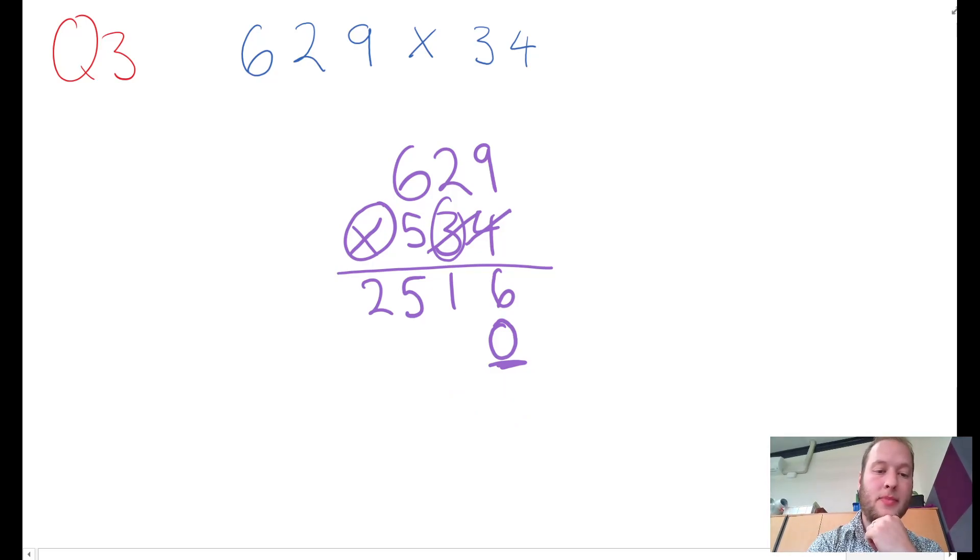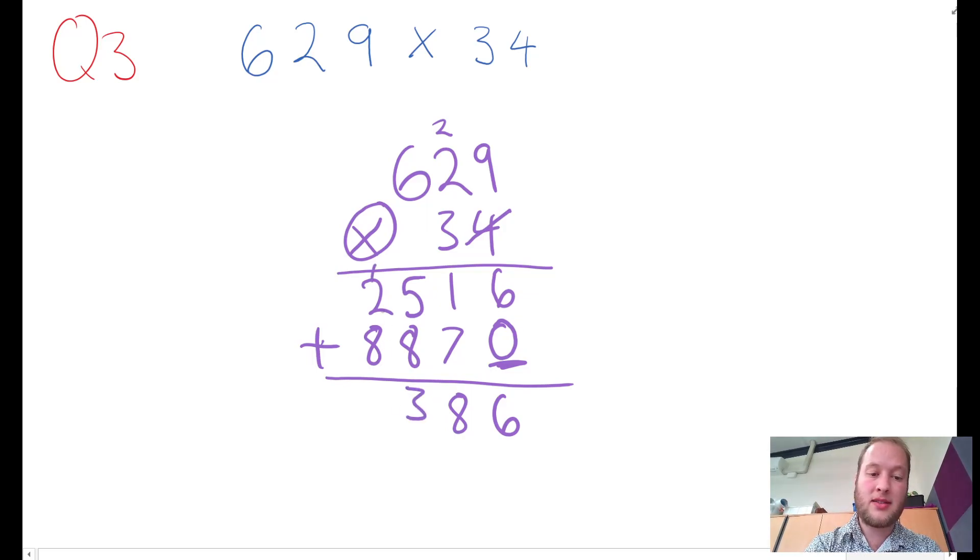We've got 3 times 9 is 27, then 3 times 2 is 6 plus 2 is 8, 3 times 6 is 18. Because I've got two rows here, I actually have to add them up. Six plus zero is 6, 1 plus 7 is 8, 5 and 8 is 13, 2 and 8 is 10 plus 1 is 11. My answer is 11,386.